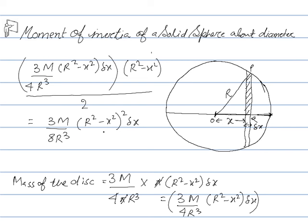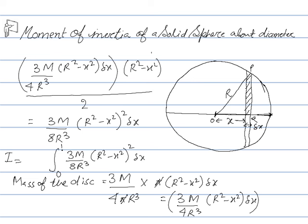We can imagine this sphere to be made up of a large number of many such strips. The moment of inertia of the sphere can be obtained by integrating this equation from x = 0 to r, and multiplying by 2, so that we get the moment of inertia of the whole sphere.